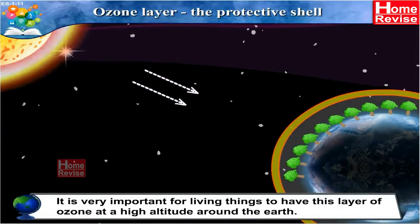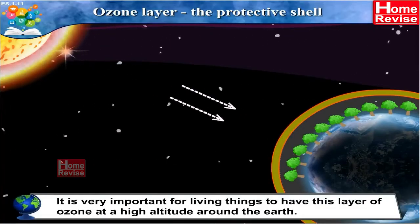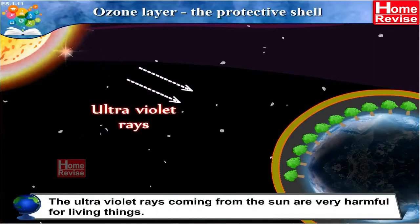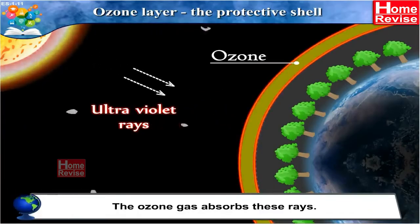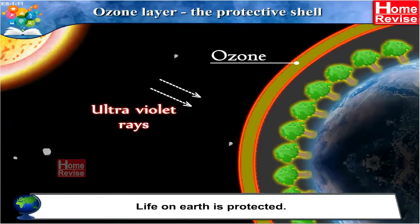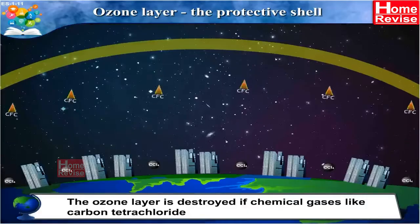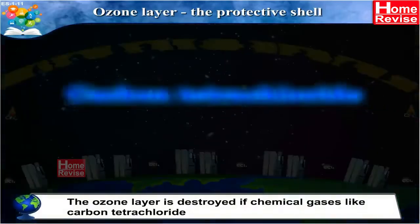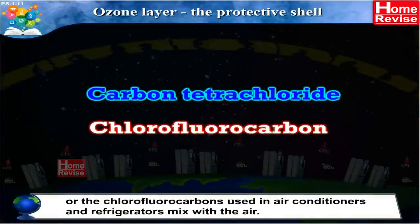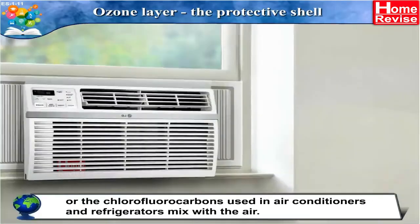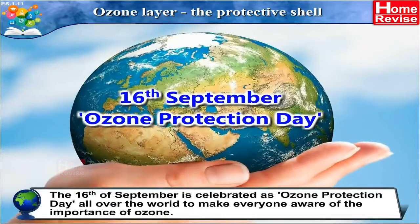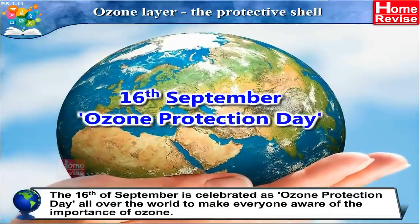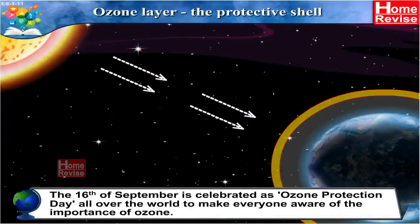The ultraviolet rays coming from the sun are very harmful for living things. The ozone gas absorbs these rays; as a result, life on earth is protected. However, the ozone layer is destroyed if chemical gases like carbon tetrachloride or chlorofluorocarbons (used in air conditioners and refrigerators) mix with the air. The 16th of September is celebrated as Ozone Protection Day all over the world to make everyone aware of the importance of ozone.